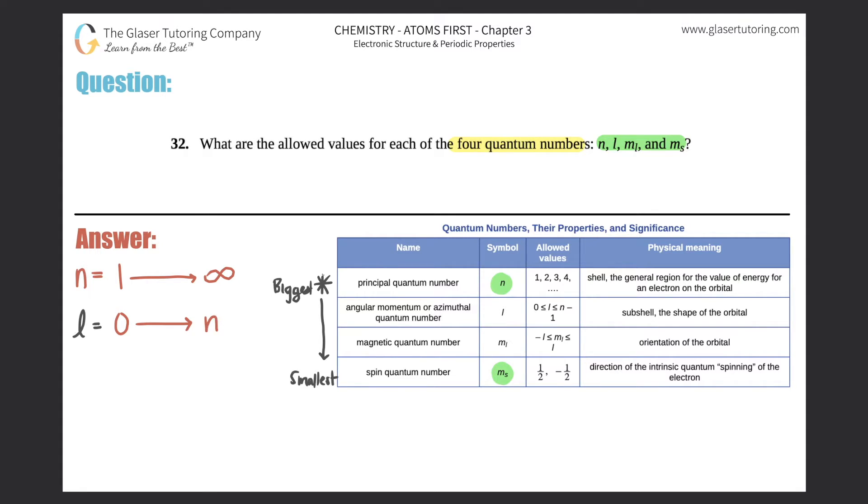Let's give an example. Let's say that n was three. Let's figure out what the l value could possibly be for n equals three. Well, it could be zero all the way up until n minus one, so technically it would be three minus one, which is zero up until two. So what are all your potential l values for this case? It would be zero, one, and two.